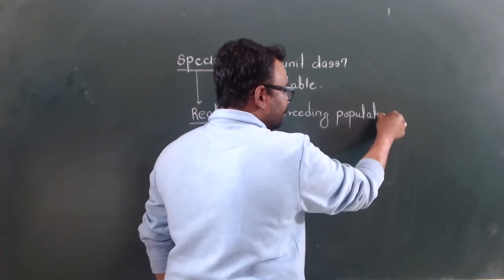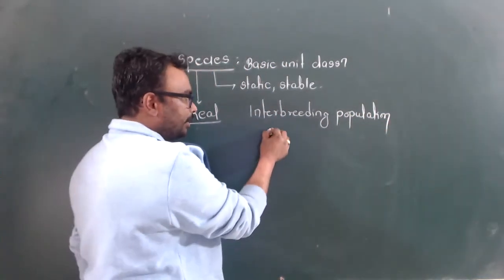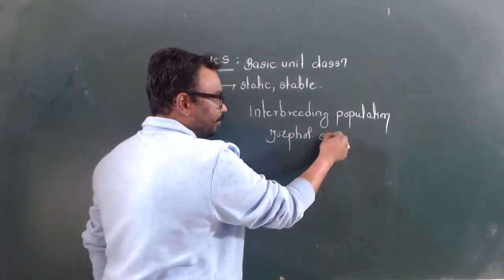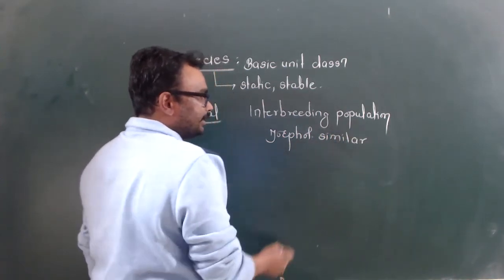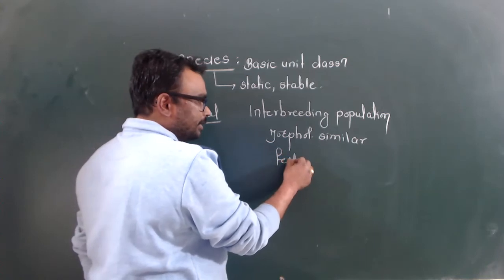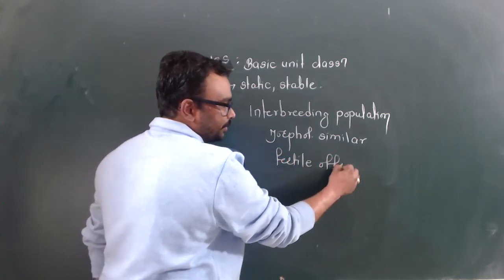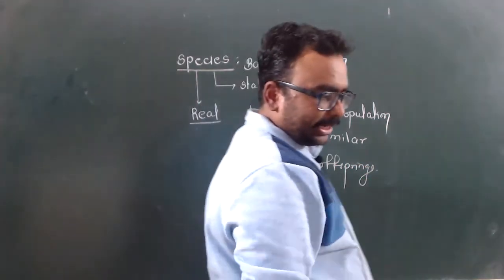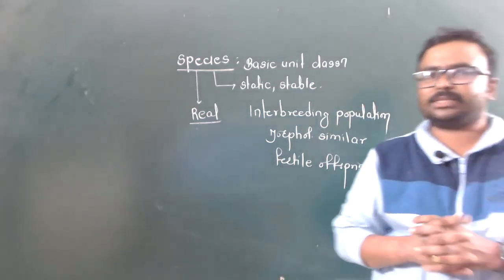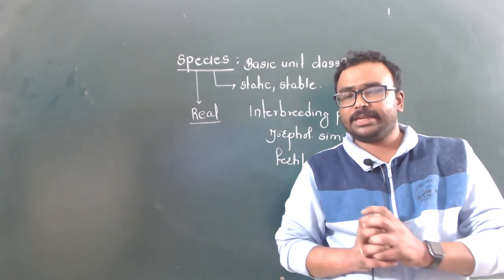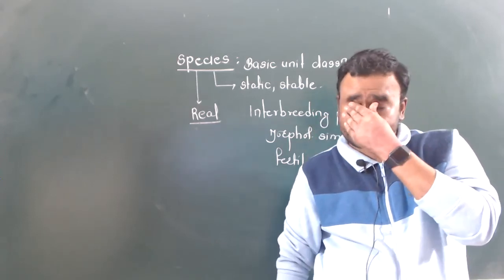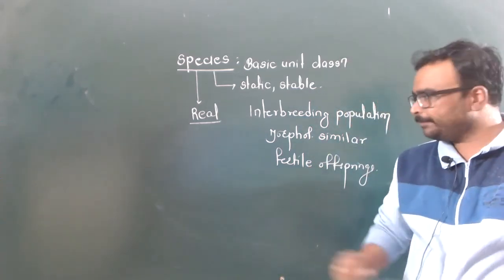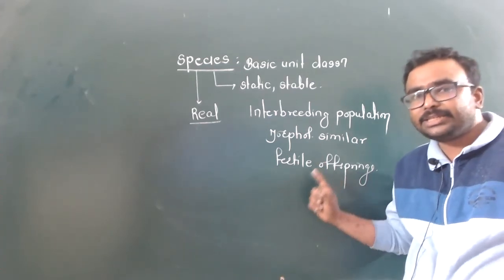A species is a group of interbreeding populations which are morphologically similar, and this group of organisms produces fertile offspring — successful reproduction. This group of organisms interbreeds successfully under natural conditions. Species is thus the basic unit, and within a species there are similarities before grouping into genus, family, class, order, and kingdom.